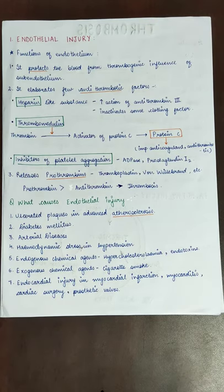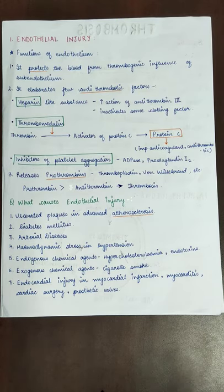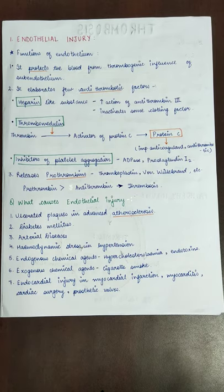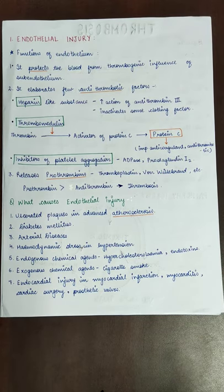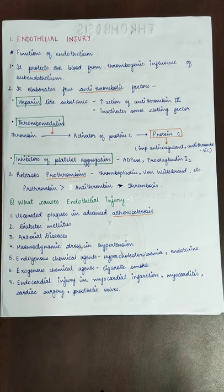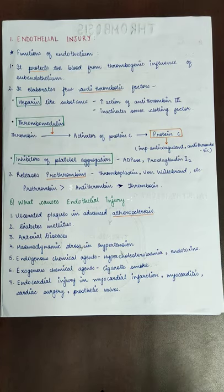The first function of the endothelium is protection. The second function is releasing anti-thrombotic factors that do not allow thrombosis. The first anti-thrombotic factor is heparin-like substances. These activate anti-thrombin 3, which inactivates certain clotting factors so that thrombosis does not form. The second anti-thrombotic factor secreted by the endothelial lining is thrombomodulin, which converts thrombin to the activator of protein C.